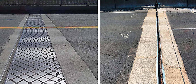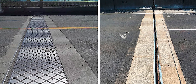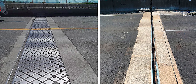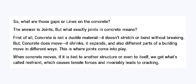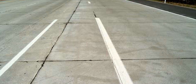So what are those gaps or lines on the concrete which you see on the roads or on the slabs? The answer is joints. But what exactly do joints in concrete mean? First of all, concrete is not a ductile material — it doesn't stretch or bend without breaking. But concrete does move: it shrinks, it expands, and different parts of a building move in different ways. This is where joints come into play.